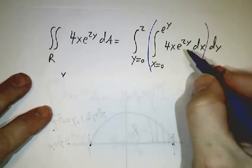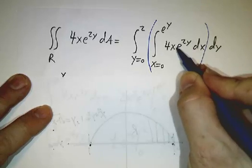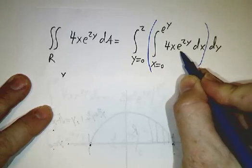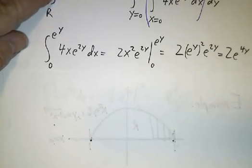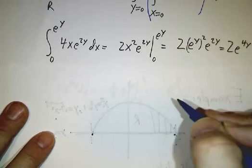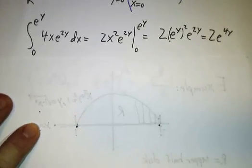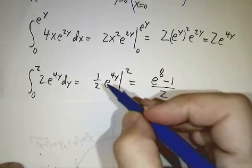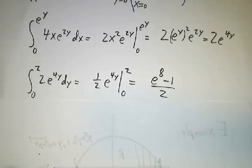Okay, now we integrate 4x e to the 2y dx. Well, e to the 2y is treated as a constant because x is our variable. This is for a particular value of y. What's the integral of 4x dx? 2x squared. So we have 2x squared e to the 2y, and we evaluate that at 0 and e to the y, and that gives us 2e to the 4y. And then we integrate that from 0 to 2, and that gives 1 half e to the 4y at 0 and 2. So that's e to the eighth minus 1 all over 2.